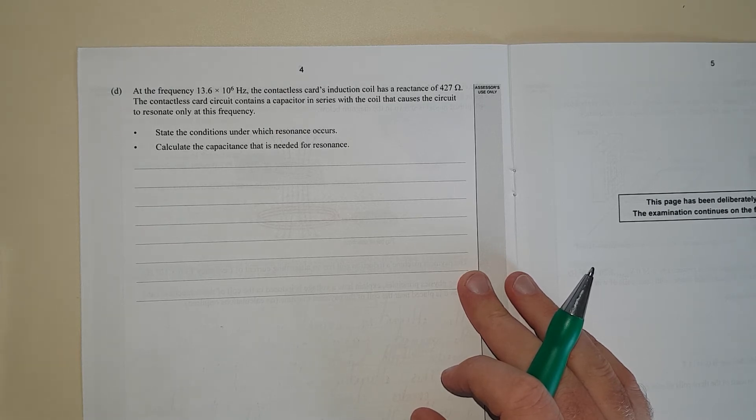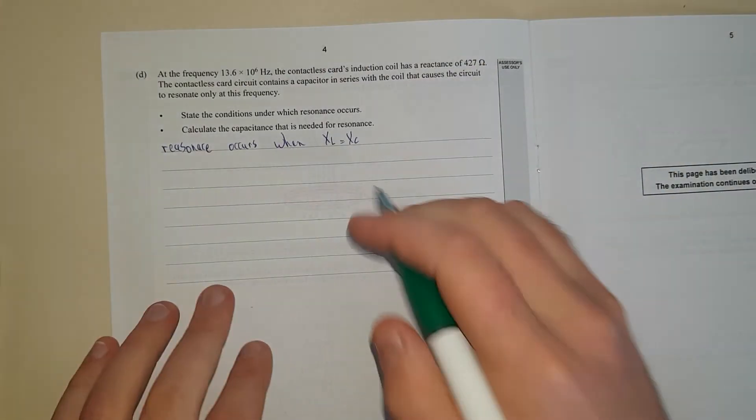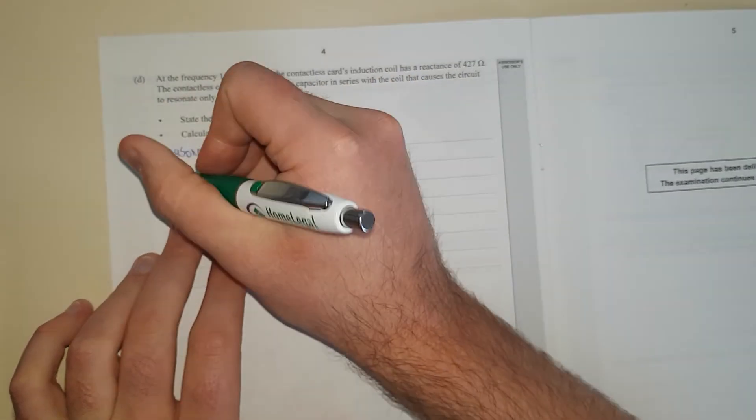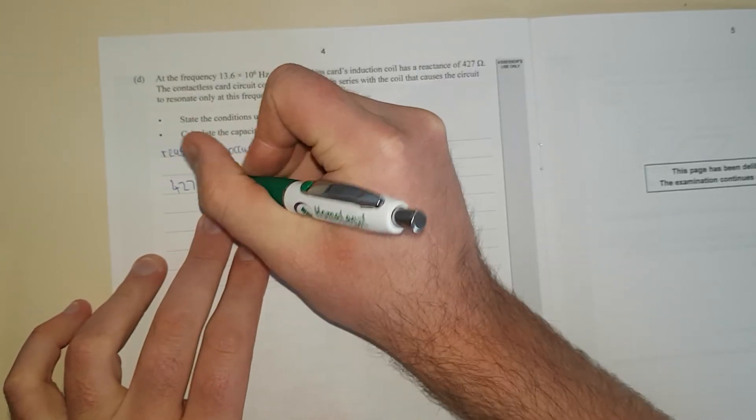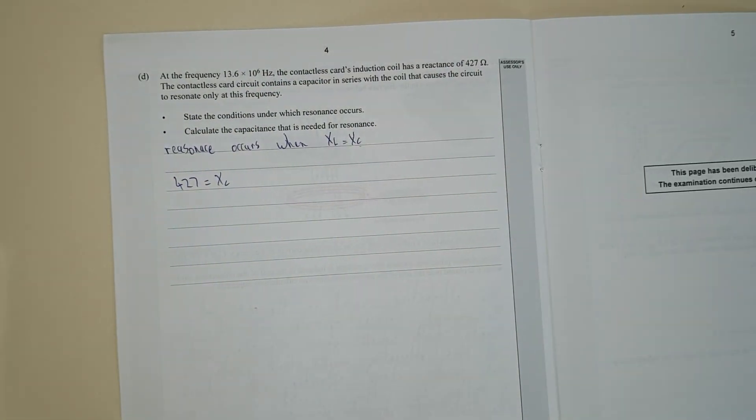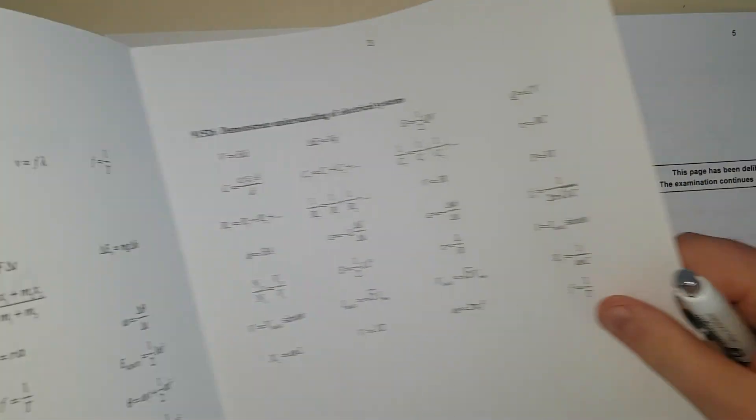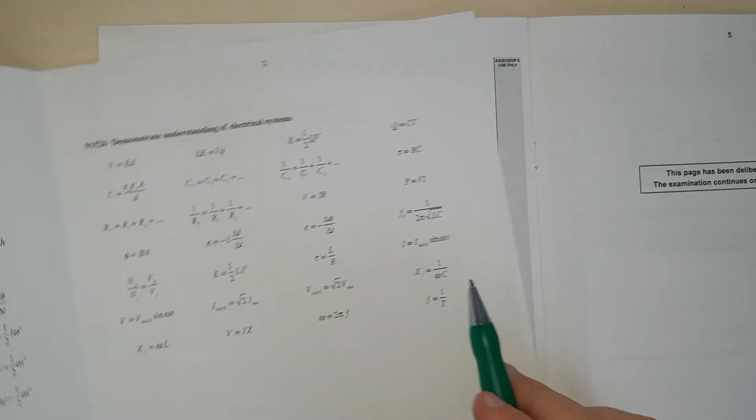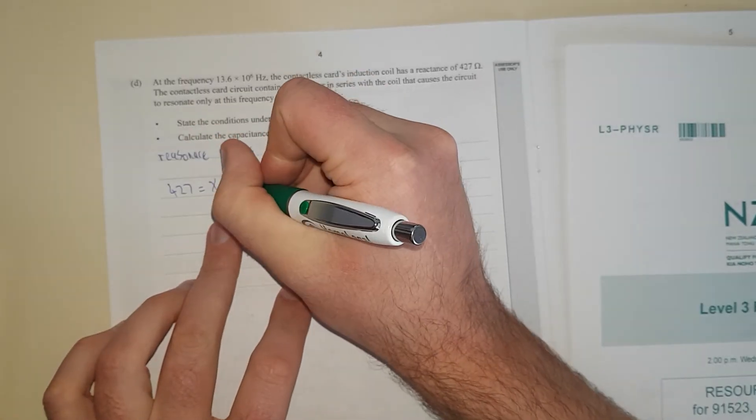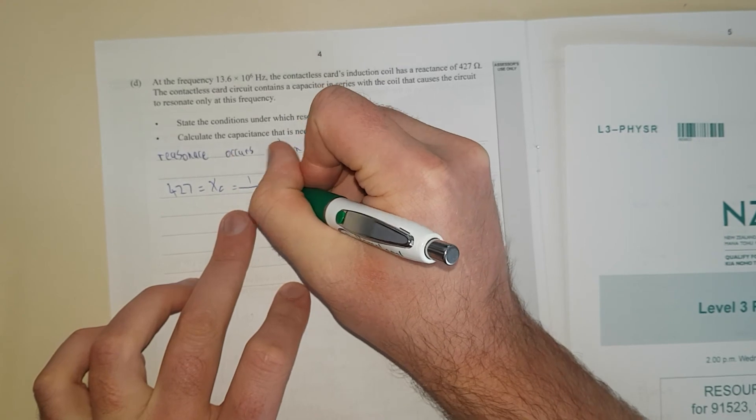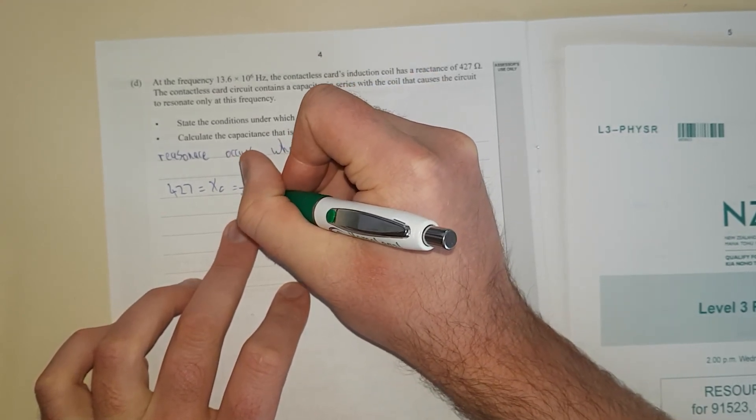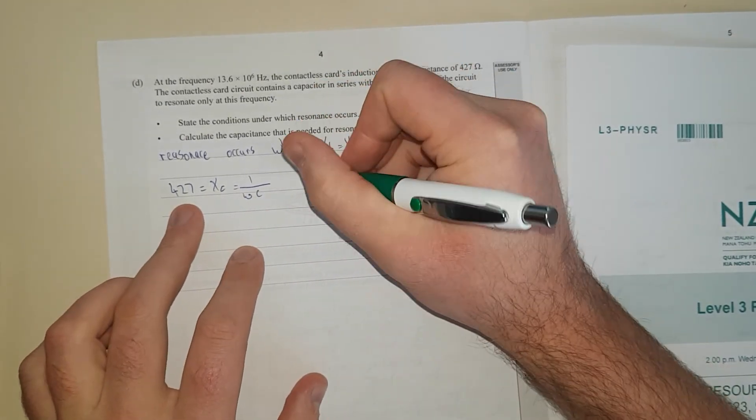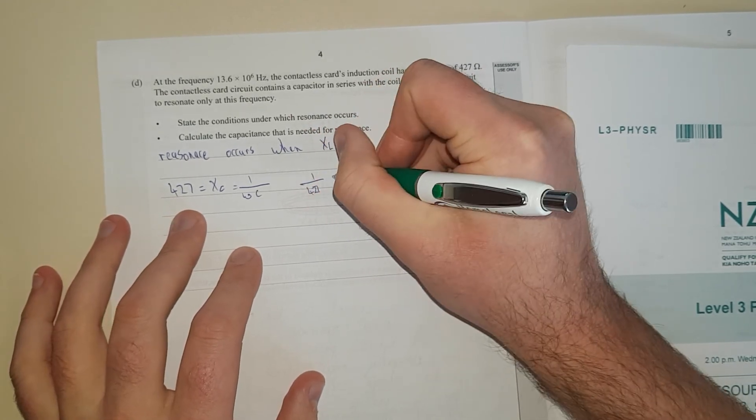So I'll just write it out first and then I'll go through the calculations. So I've said resonance occurs when the reactance of the inductor is equal to the reactance of the capacitor, which pretty much just means 427 is equal to XC, which is the reactance of the capacitor. Because we're just trying to find the capacitance needed for this. So if you go into your formula sheet, XC is 1 over omega C, which is just the angular frequency. So that should be equal to 1 over omega C. And now I'm just going to rearrange for C, so I'll just flip this fraction. So I'll end up with 1 over 427 is equal to 2 pi F C.